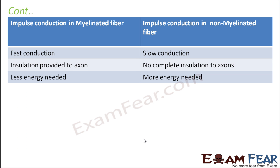Next: impulse conduction in myelinated versus non-myelinated nerve fibers. In a myelinated fiber, the insulation is more, therefore the conduction is fast and less energy is needed. In a non-myelinated fiber, there is incomplete insulation for the axon, so conduction is slow and more energy is needed.